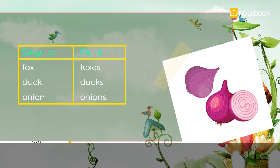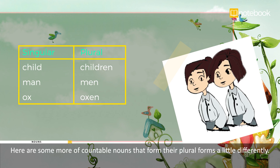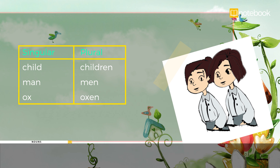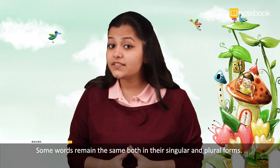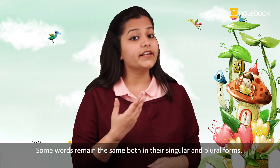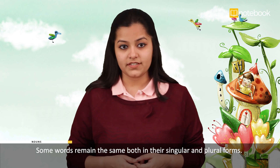plural onions. Here are some more countable nouns that form their plural forms a little differently: singular child, plural children; singular man, plural men; singular ox, plural oxen.